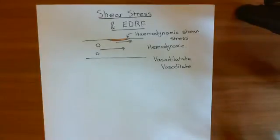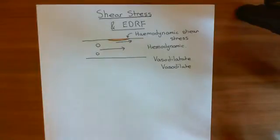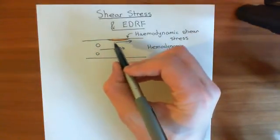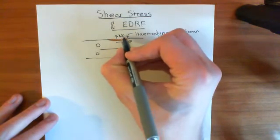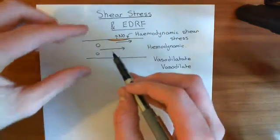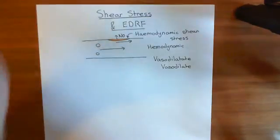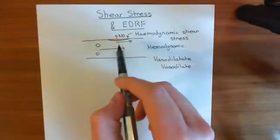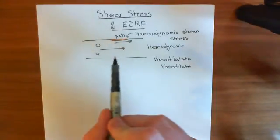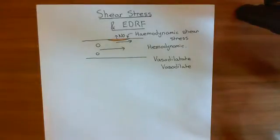What we want to understand is how the endothelium makes the blood vessel dilatate. We know what's coming — endothelial cells make blood vessels dilatate by releasing nitric oxide. When the endothelial cell detects an increase in hemodynamic shear stress, it starts producing nitric oxide, which goes to the smooth muscle cells lining it. The smooth muscle cells then relax, and that increases the lumen diameter of the blood vessel.